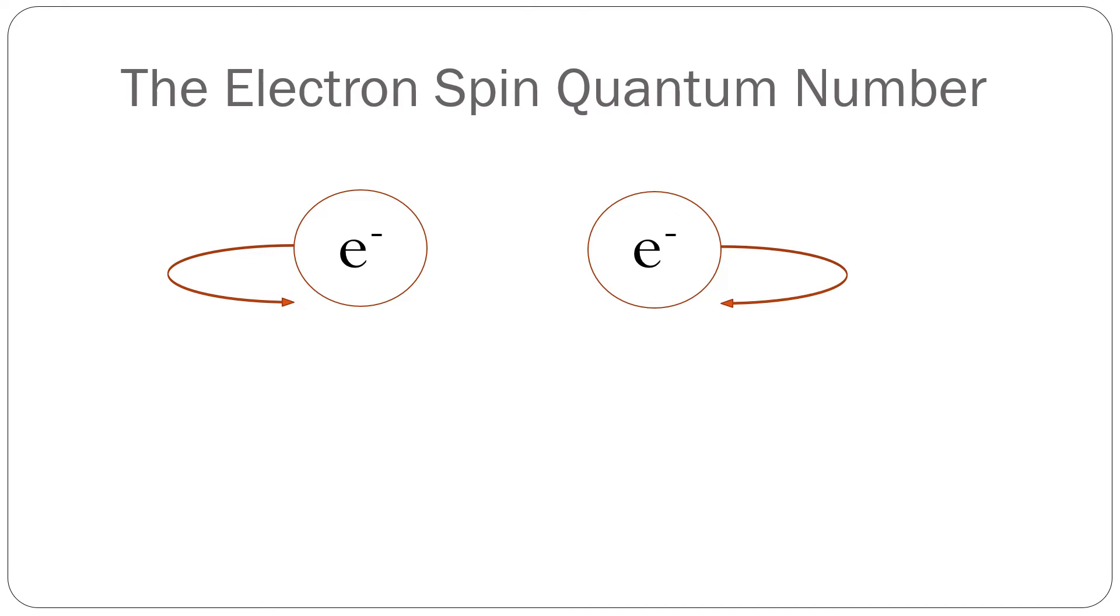Furthermore, this magnetic moment can have two possible orientations when an electron is placed in a magnetic field.